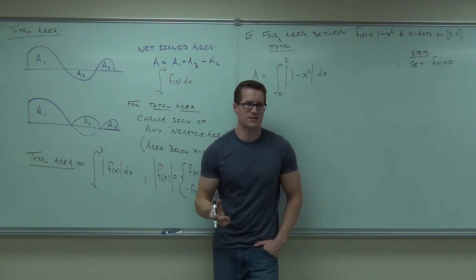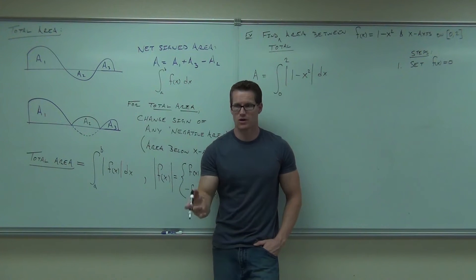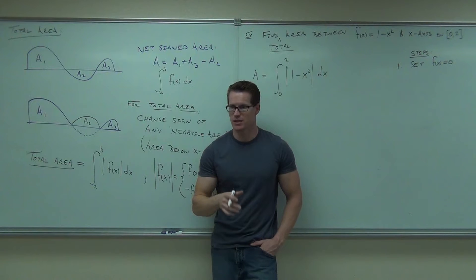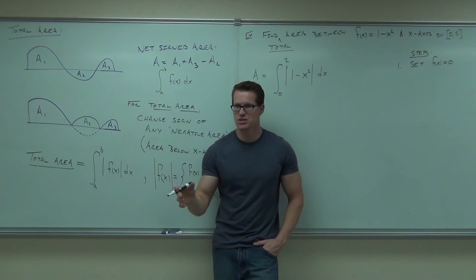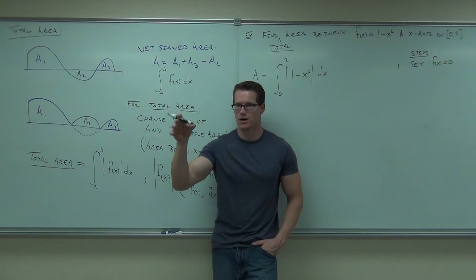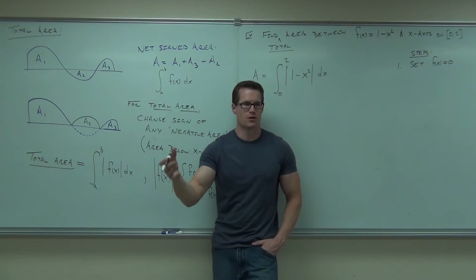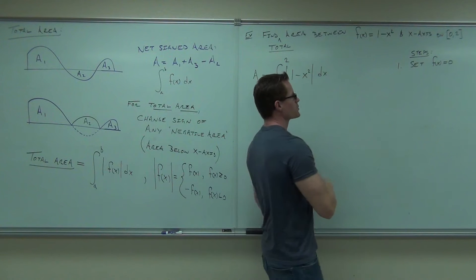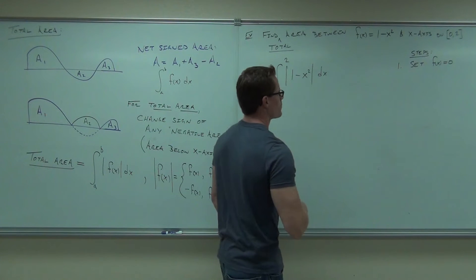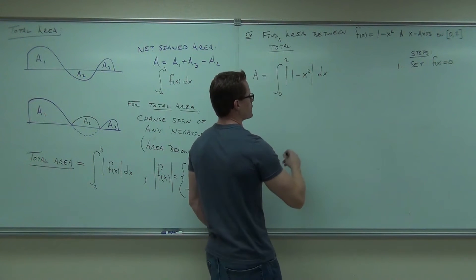That makes sense to me. If you know where it crosses the x-axis, then you can perform a sign analysis test — plug in some numbers easily, and say: it's above, it's below. Therefore I know when the area's going to be positive, when it's going to be negative. So set the function equal to zero and solve.